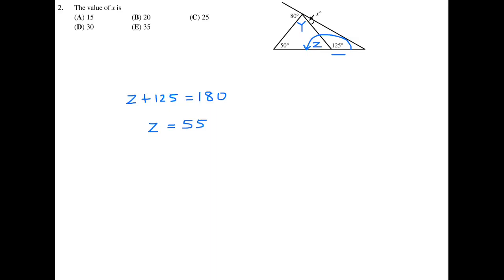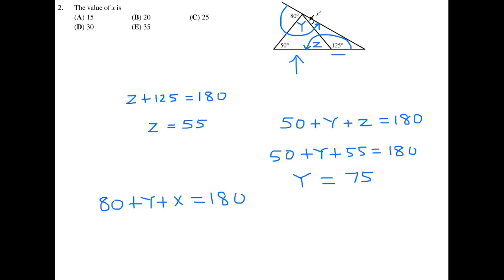We can look at the sum of the angles of this triangle. The sum of the angles of a triangle are always 180. So this becomes 50 plus Y plus 55 is 180. And we can solve for Y, and Y becomes 75. Then finally all the angles about this line are 180. So therefore 80 plus Y plus X is 180. Y plus X is 100. Y is 75, so 75 plus X is 100, and therefore X is equal to 25. So the answer here is C.